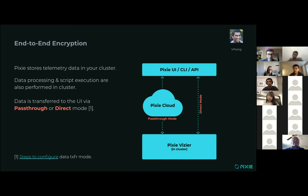No matter which of these two data transfer modes you use, all of these connections do still use TLS, so the data is always point-to-point encrypted in transit. However, even in this scenario, it is still possible that you might want to use Pixie cloud for the convenience but you might be running a Pixie cloud instance in an environment you don't fully trust. So we really wanted to address that scenario where you're using pass-through mode with Pixie cloud but still want to protect your data in transit.